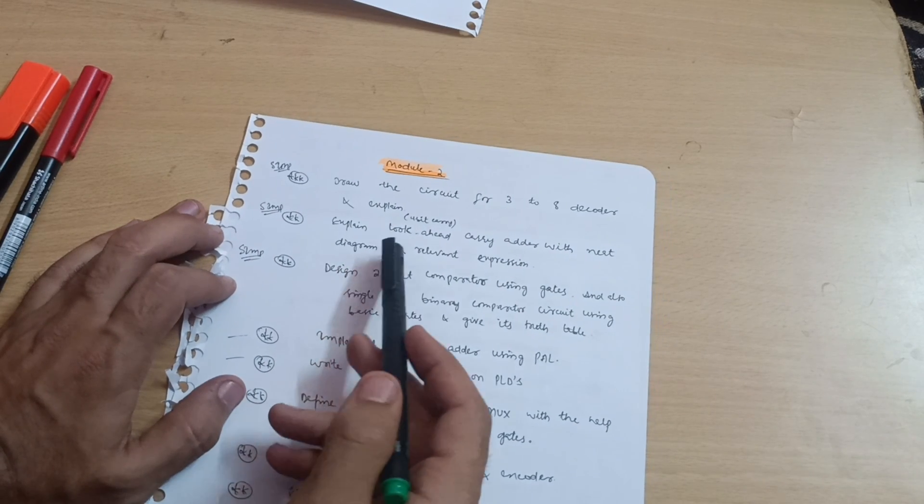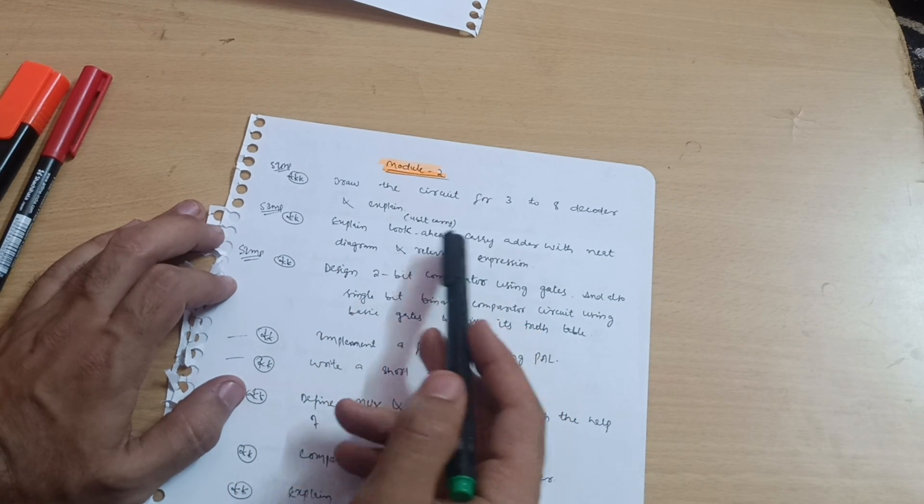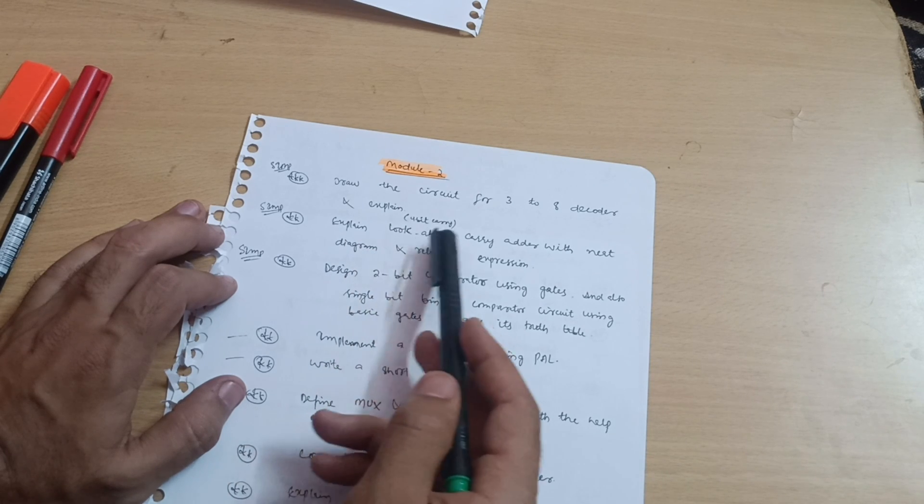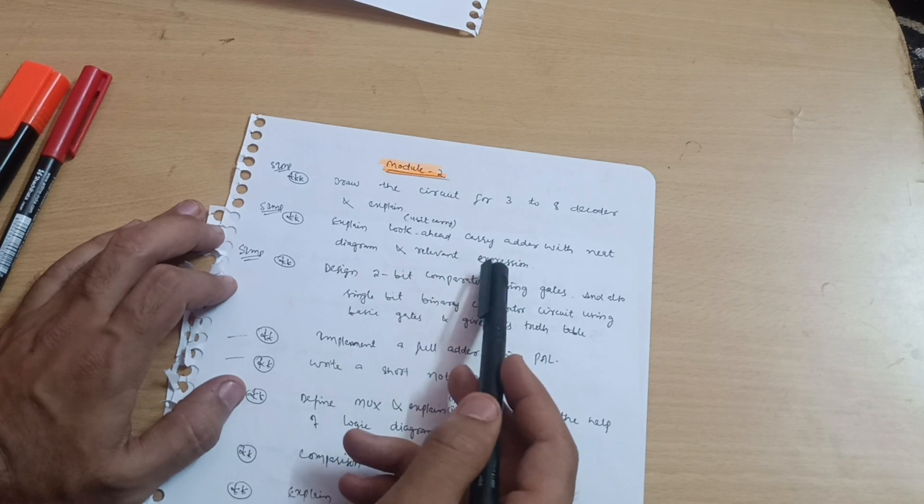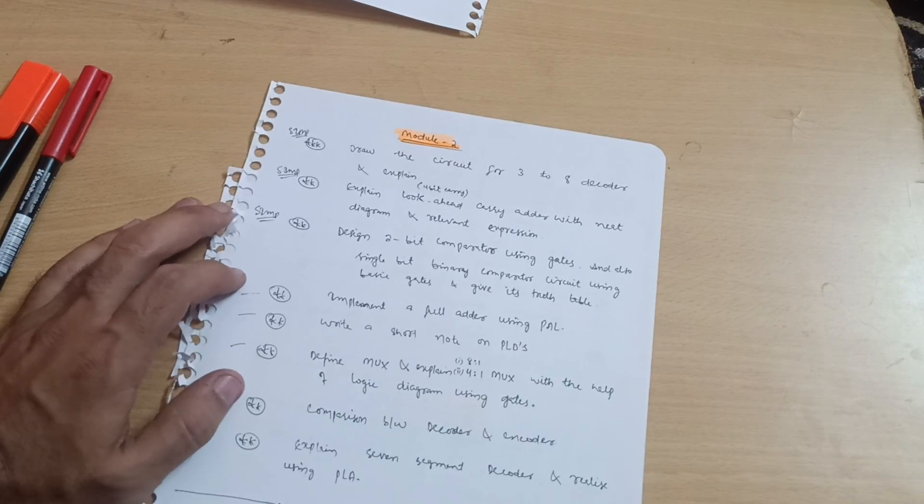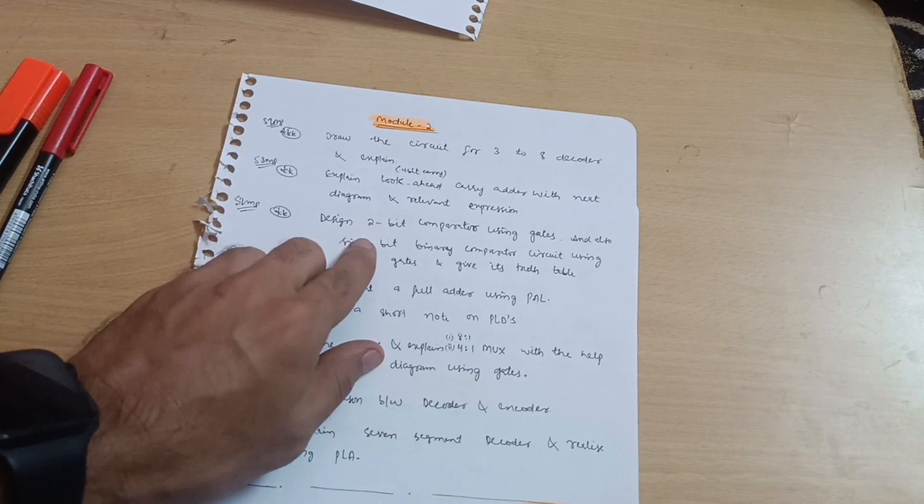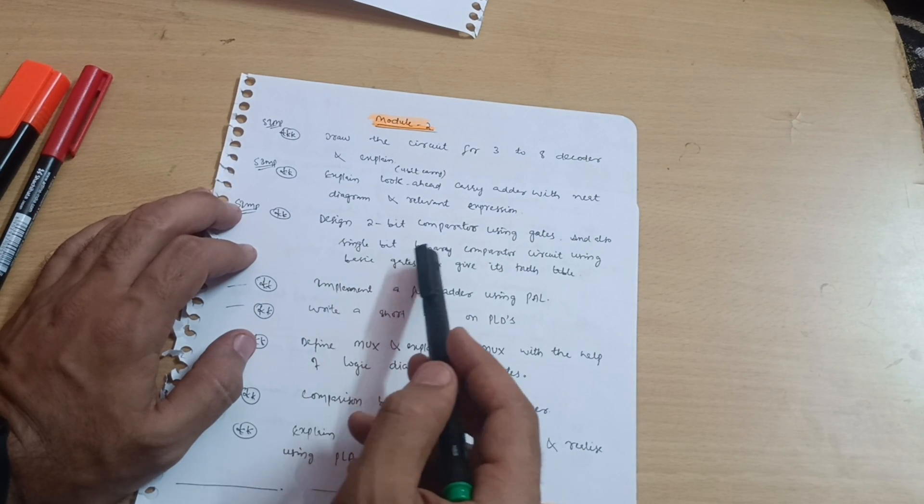Explain look-ahead carry adder, or sometimes they will explain four-bit carry look-ahead adder with neat diagram and relevant expression. They may set the questions like that. Don't be confused, it is one question. Next is design a two-bit comparator using gates and also single-bit binary comparator circuit using basic gates and give its truth table.